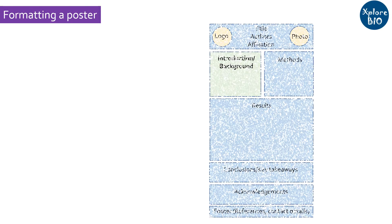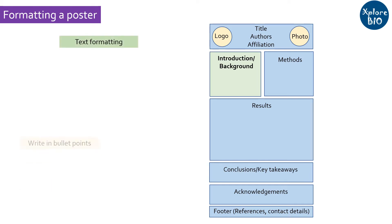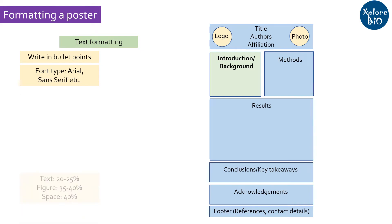Now let's talk about formatting a poster. Try to write in short bullet points rather than paragraphs — bullets are easy to read. Choose an easily readable font type such as Arial or Sans Serif. Ideally, the text portion in a poster should be about 20 to 25%, with 35 to 40% space allocated for figures or tables, and the remaining space kept empty. This way your poster will look clear and less crowded. Font size should be large enough that the poster can be read from a distance of at least 5 feet.